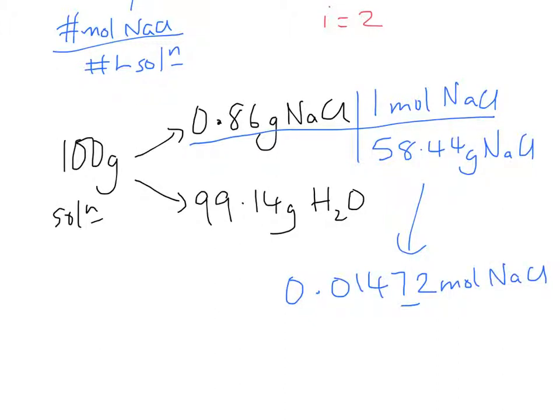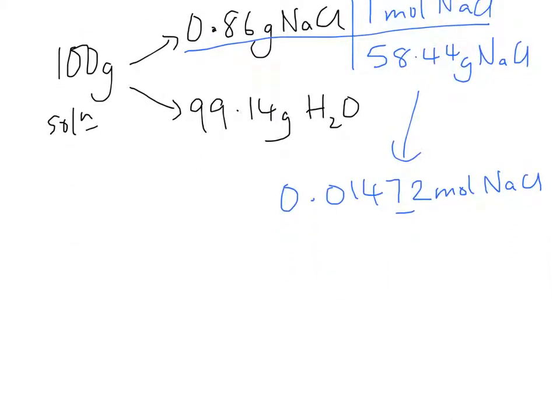In order to find the molar concentration, we need the number of moles of sodium chloride, which we've just figured out. And we need to know the number of liters of solution. And that we have to figure out by using the density. So we have 100 grams of our solution. And the density was given in this problem of 1.005 grams per milliliter. And so that means we can write that as a conversion factor.